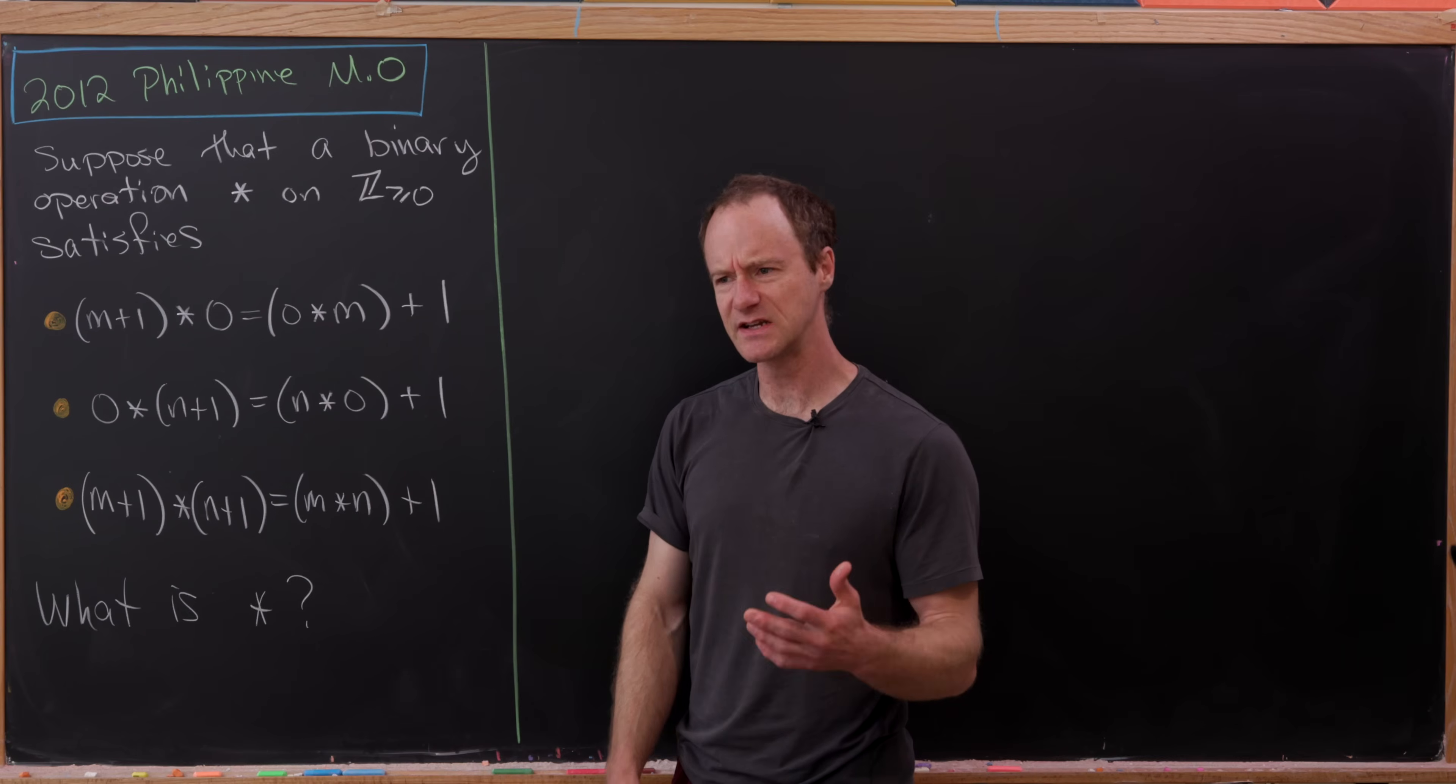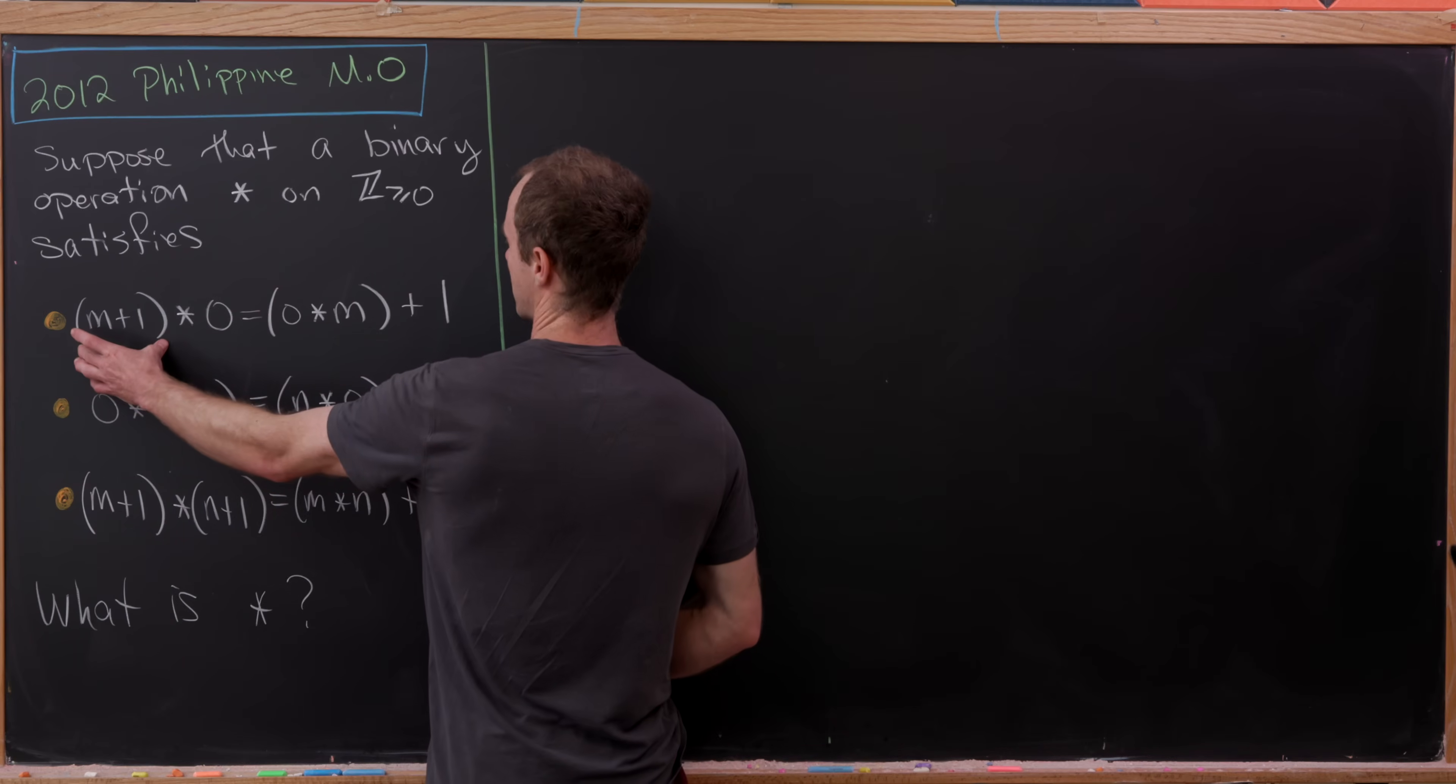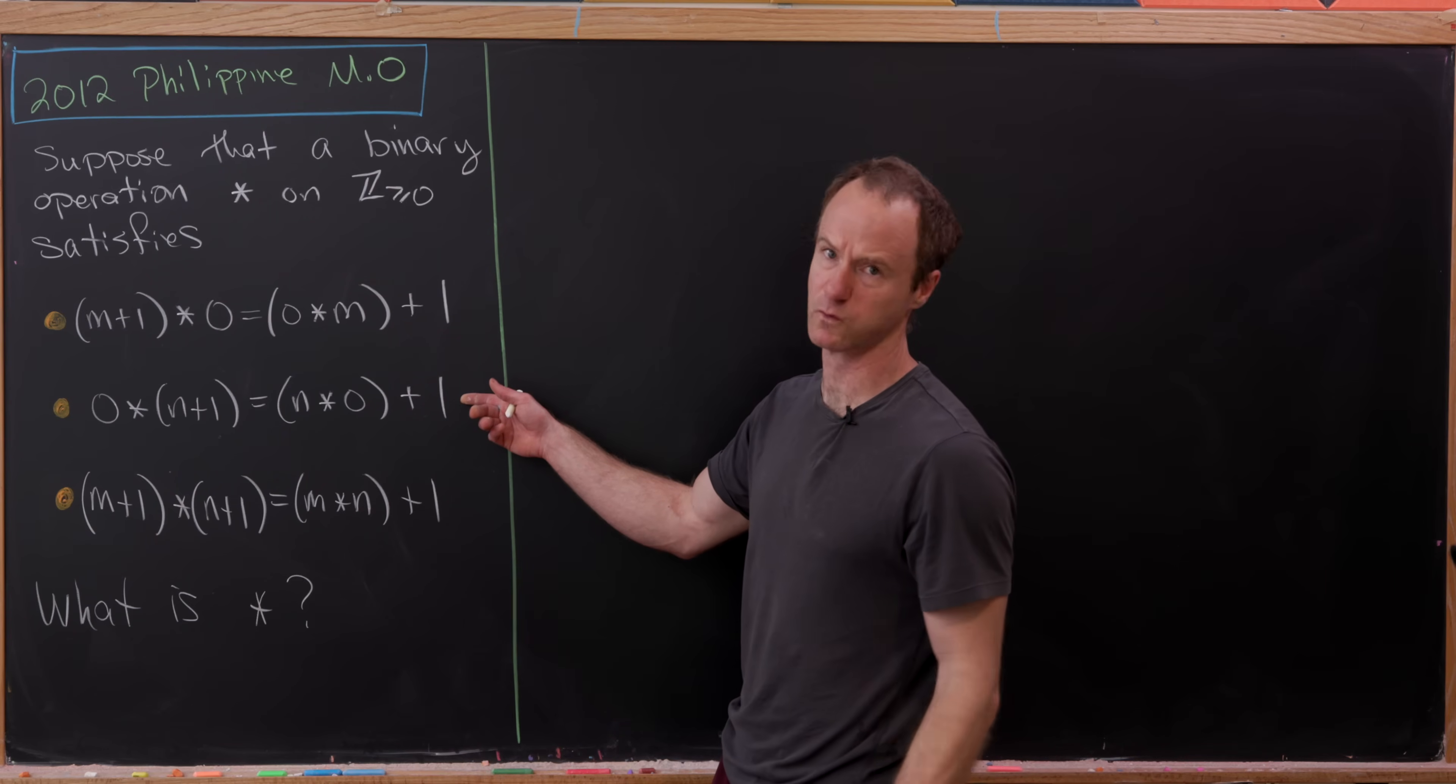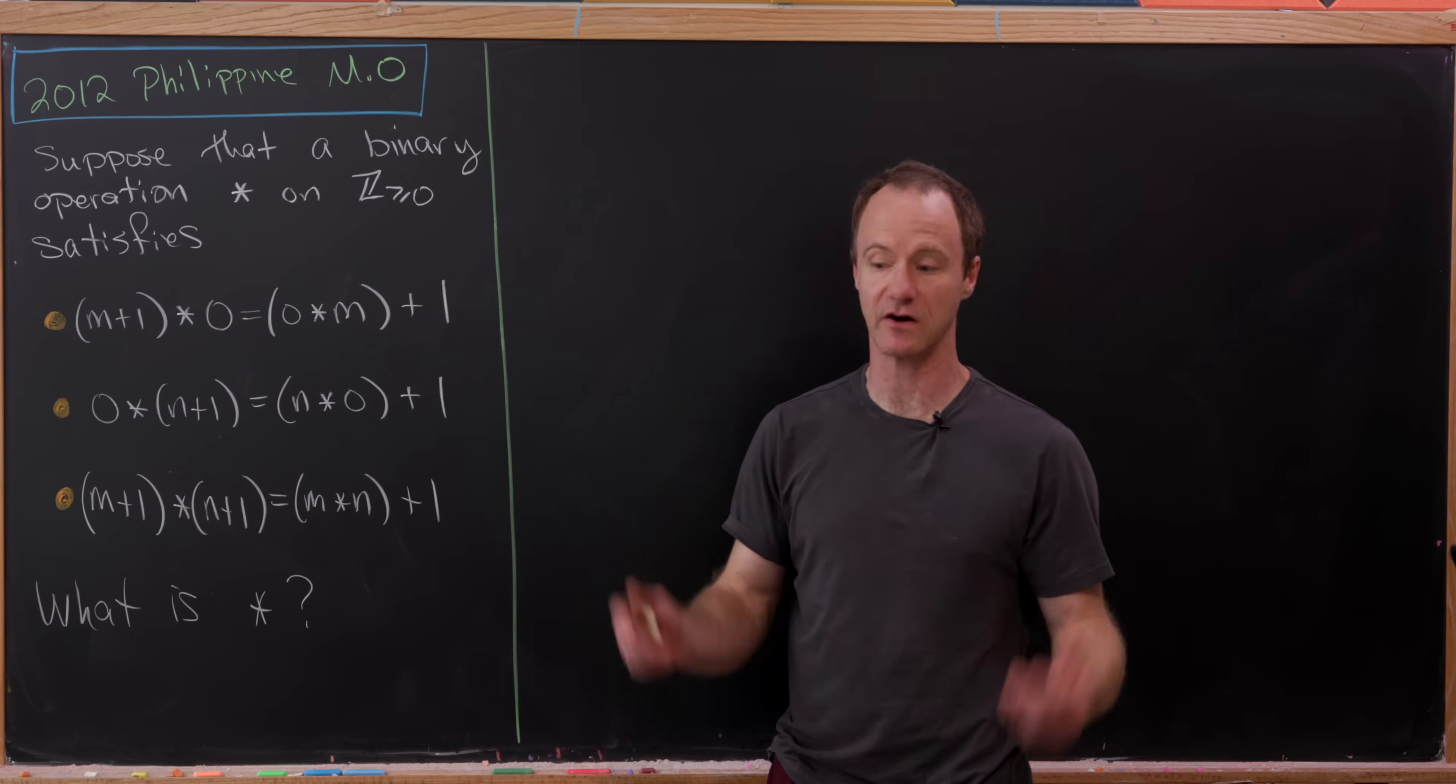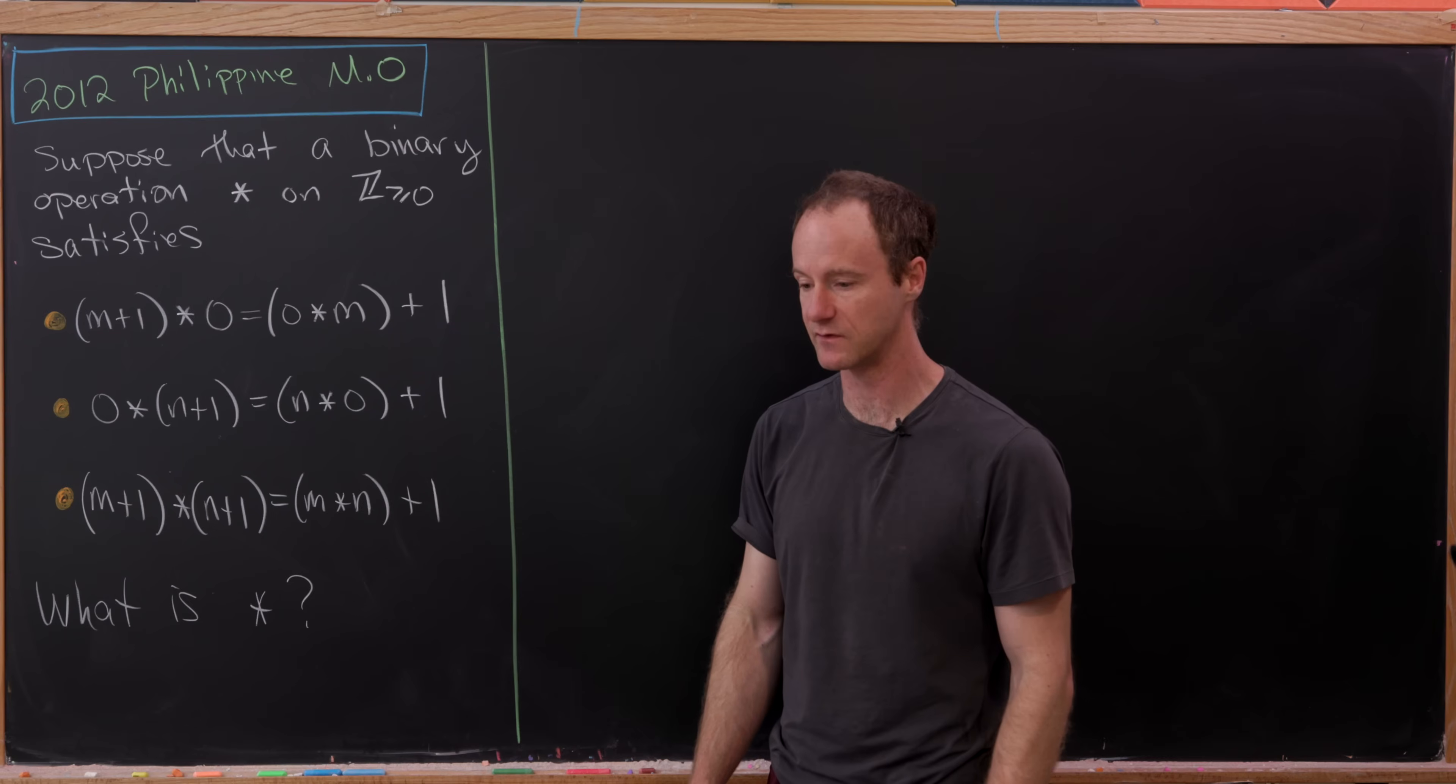I'd like to notice that we've got some clues here that this star operation should be commutative. That's because here the variable is on the left, (m+1) star 0, whereas here it's on the right, 0 star (m+1). Likewise this second rule also does the switcheroo of where the variable ends up. This is just a hint that it should be commutative, but we've got to make sure that's actually true.